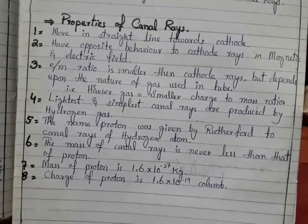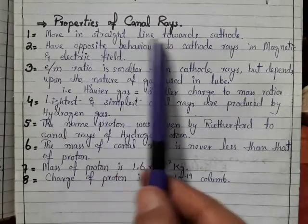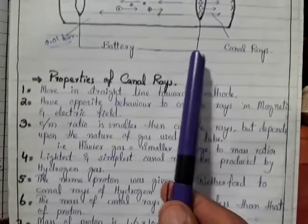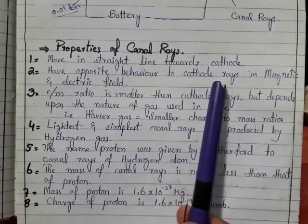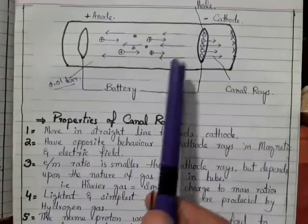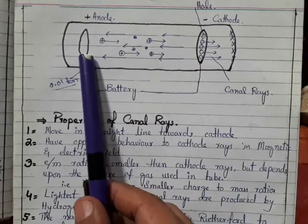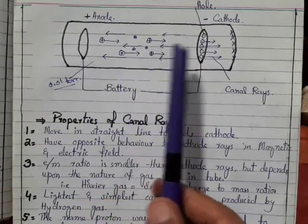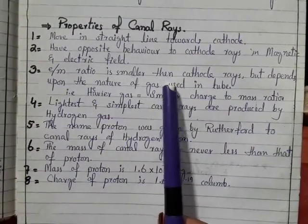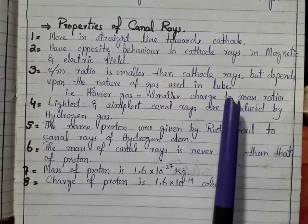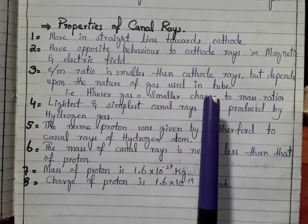Now let's see the properties of canal rays. They move in a straight line. They have opposite behavior to cathode rays in the magnetic and electric field. The charge to mass ratio is smaller than cathode rays, but depends upon the nature of the gas used in the tube.